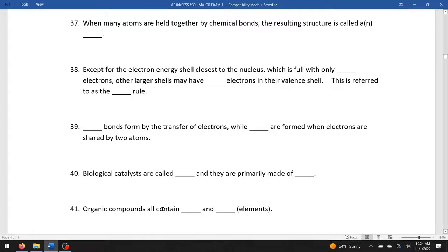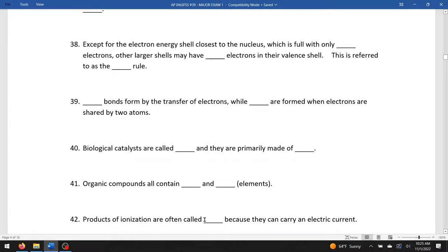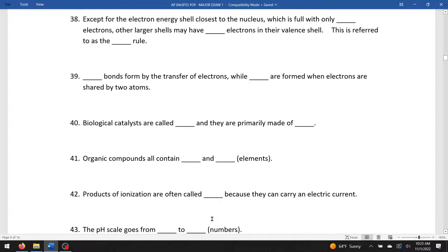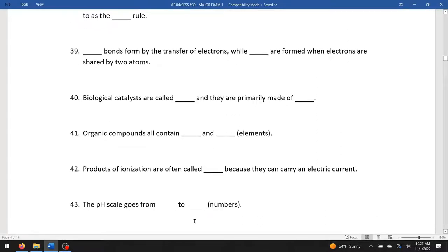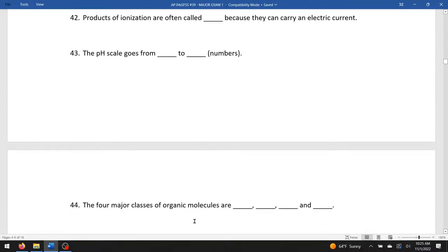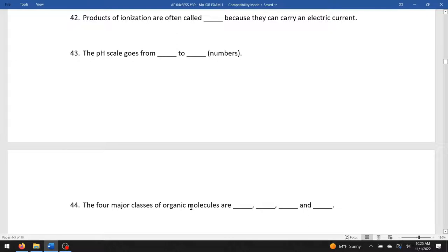Organic compounds all contain blank and blank. Organic carbon compounds are called hydrocarbons. So they contain hydrogen and carbon. Products of ionization are called electrolytes because they carry an electric current. The pH scale goes from zero to 14. The four major classes of organic molecules: proteins, carbs, lipids, and nucleic acids.